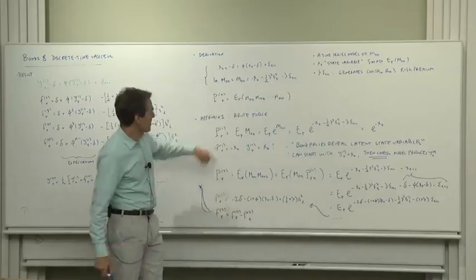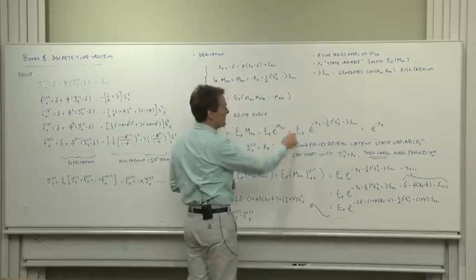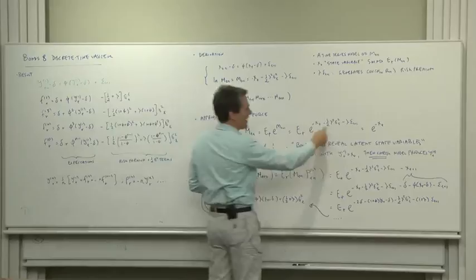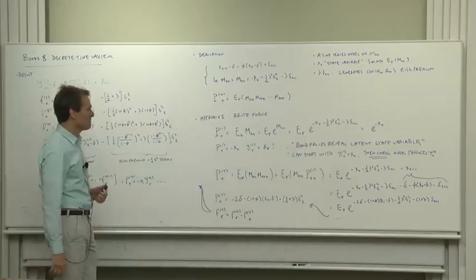Price of the one period bond is the expected discount factor—expected e to the log discount factor. The log discount factor, I wrote down that formula. And what is expected value of e to all this stuff? Well, we get the x minus a half lambda squared sigma squared epsilon, plus a half lambda squared sigma squared epsilon, just minus e to the x. Now you know why I put the lambda squared sigma squared epsilon term in there to start with, so it would cancel what comes out of here.